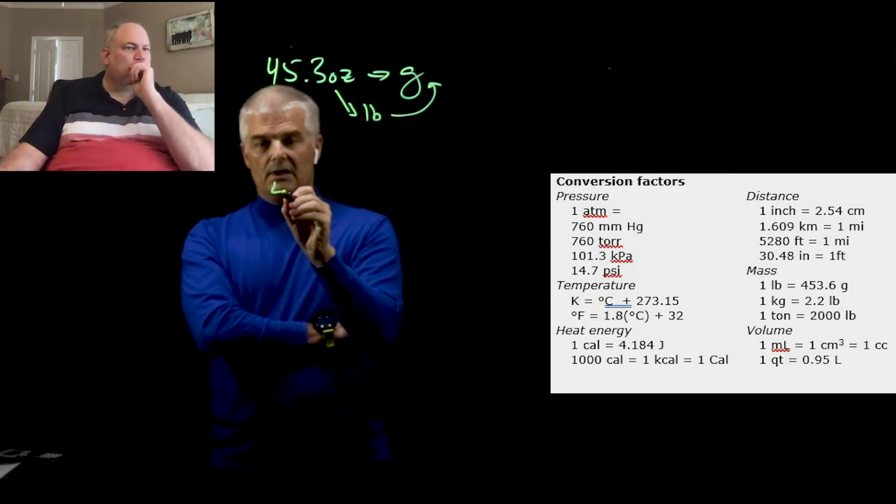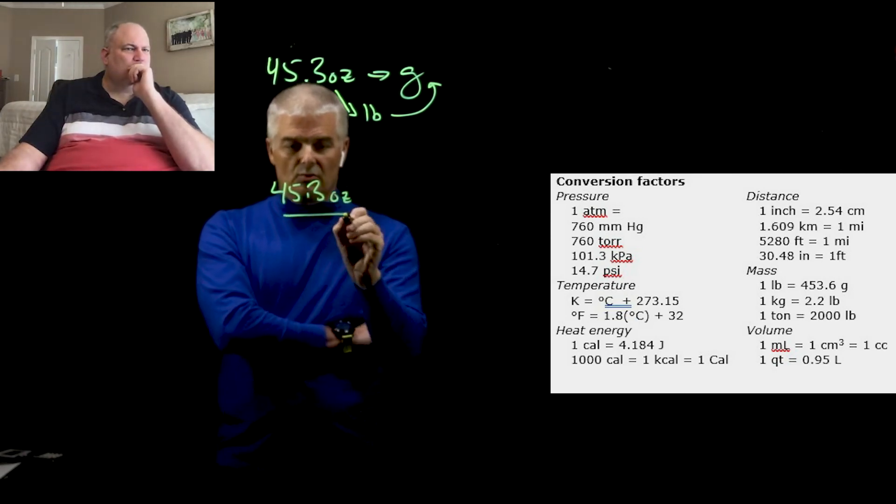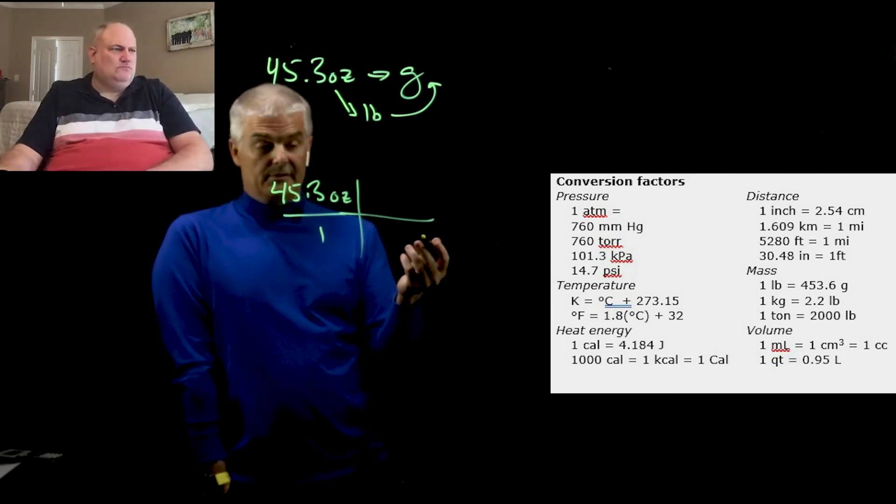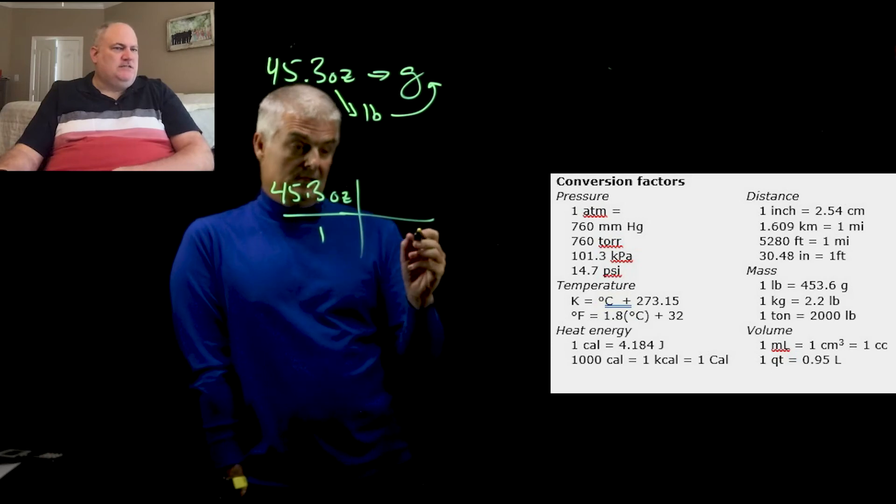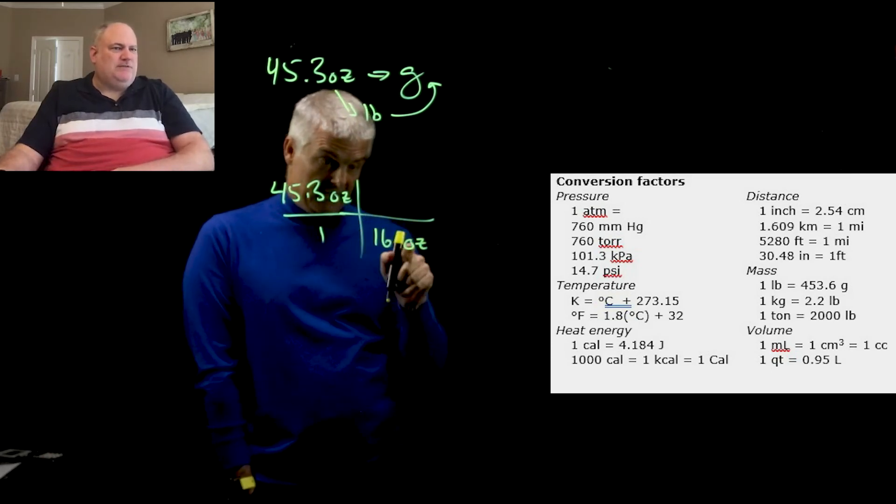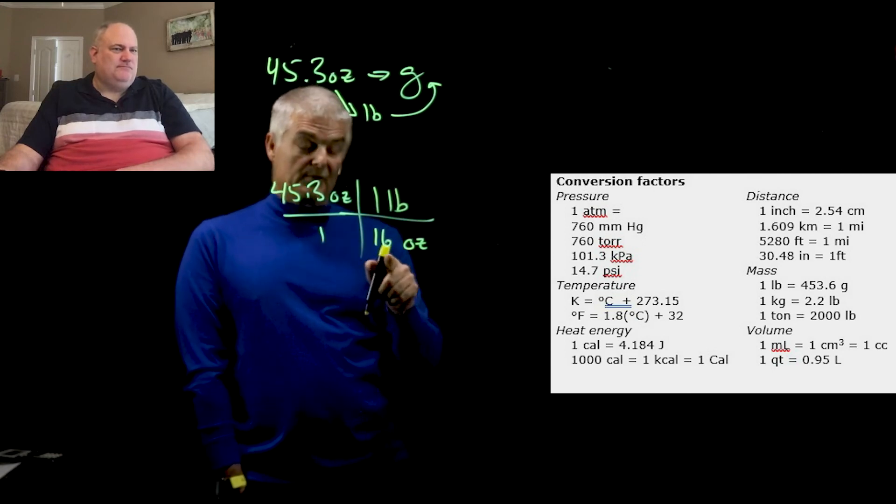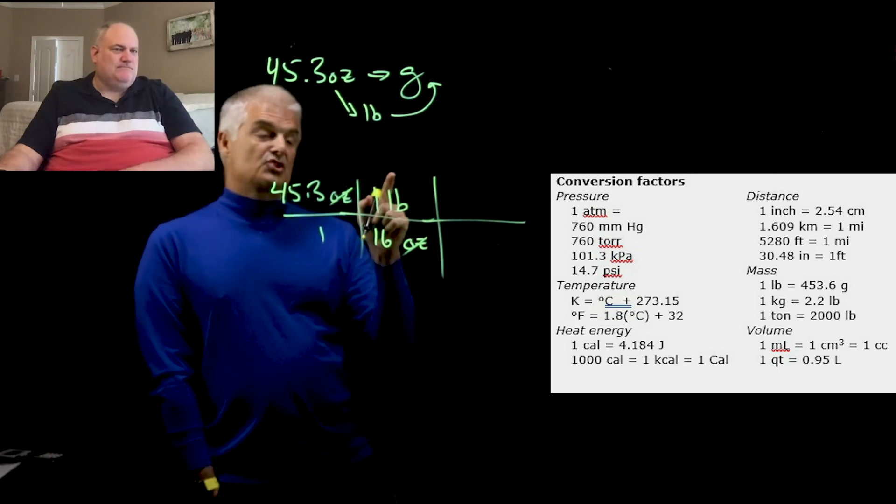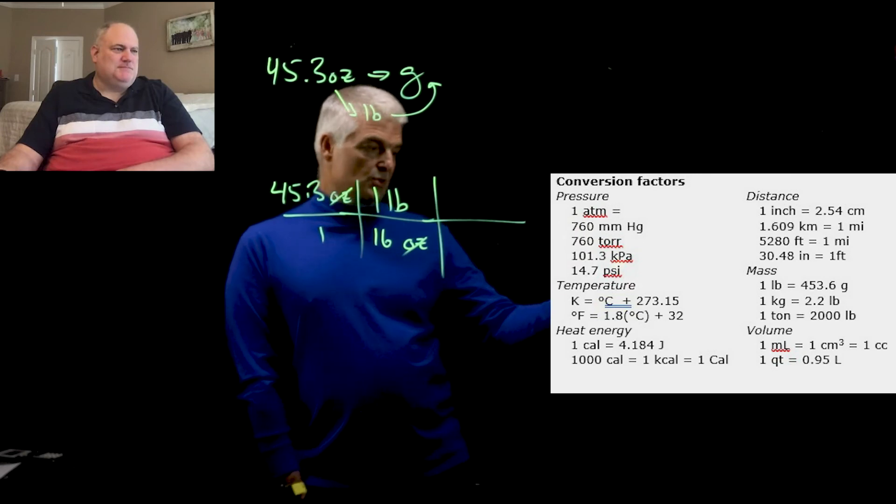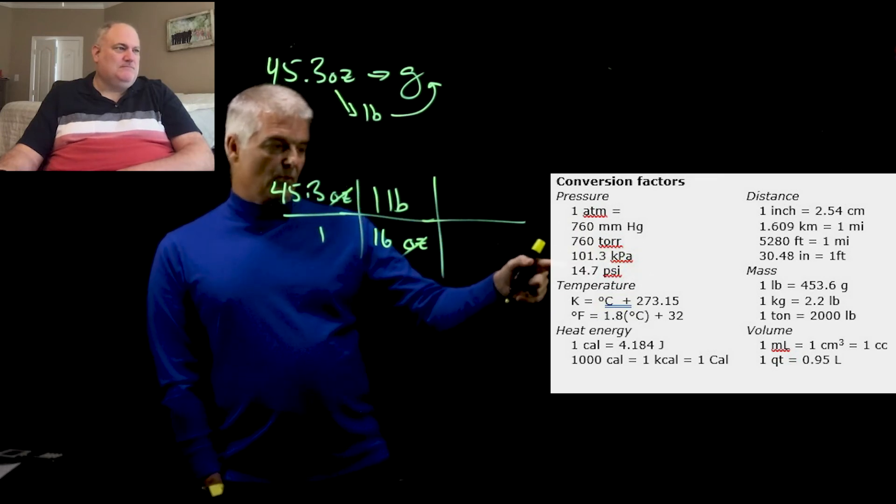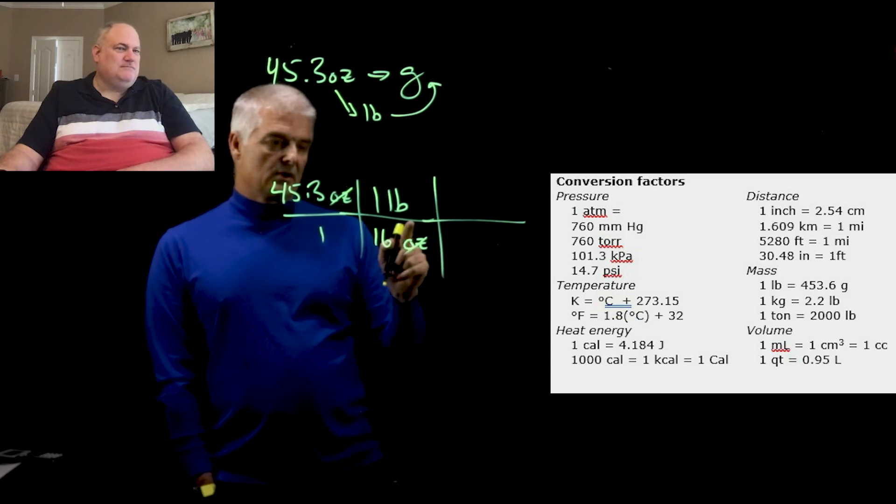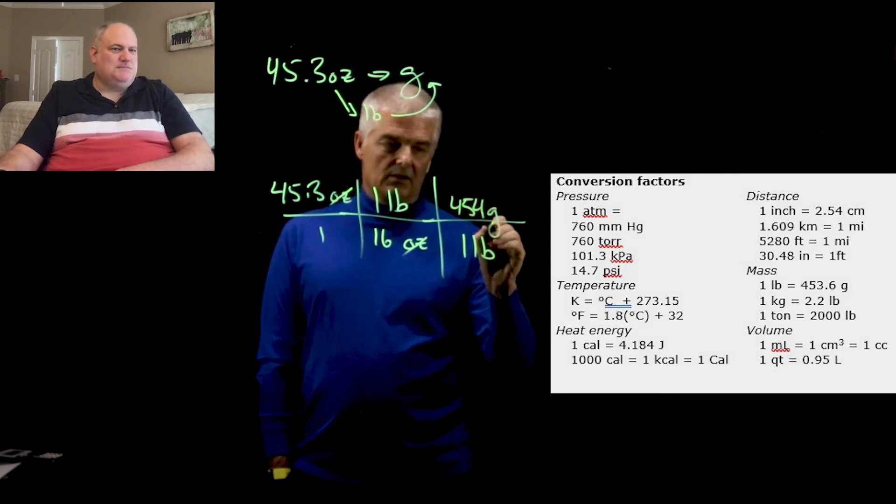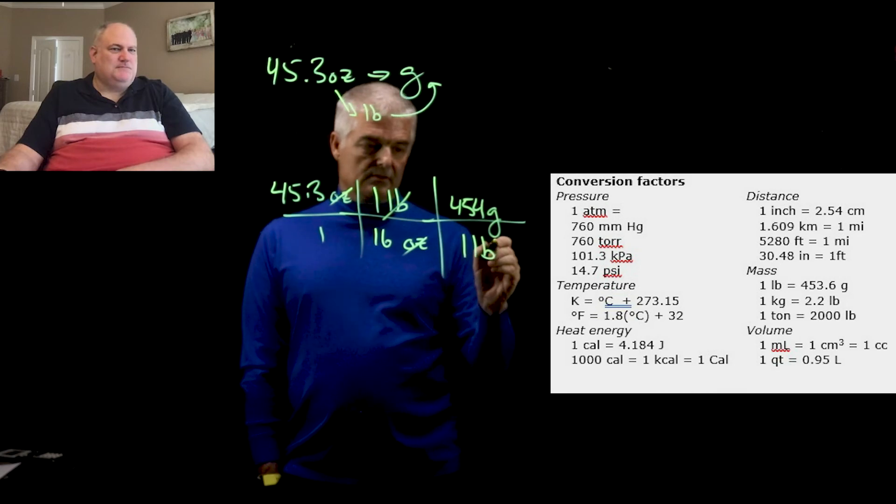So, what do we do? We write it as a fraction over one, 45.3 ounces over one times a fraction. We've got ounces. So, how many ounces are in a pound, Mr. Demetrius, from the table? This might be something people know. Yeah, it's 16 ounces in a pound. And ounces go on the bottom. So, you can count down. And now we've got a number on the bottom. That's what I wanted to get at. So, the ounces cancel. And now, I want to go from pounds to grams. Now, the conversion, as you can see, is 454 grams in a pound. So, what goes on the bottom? Pounds, right? One pound is 454 grams. And the pounds cancel, and we have grams.